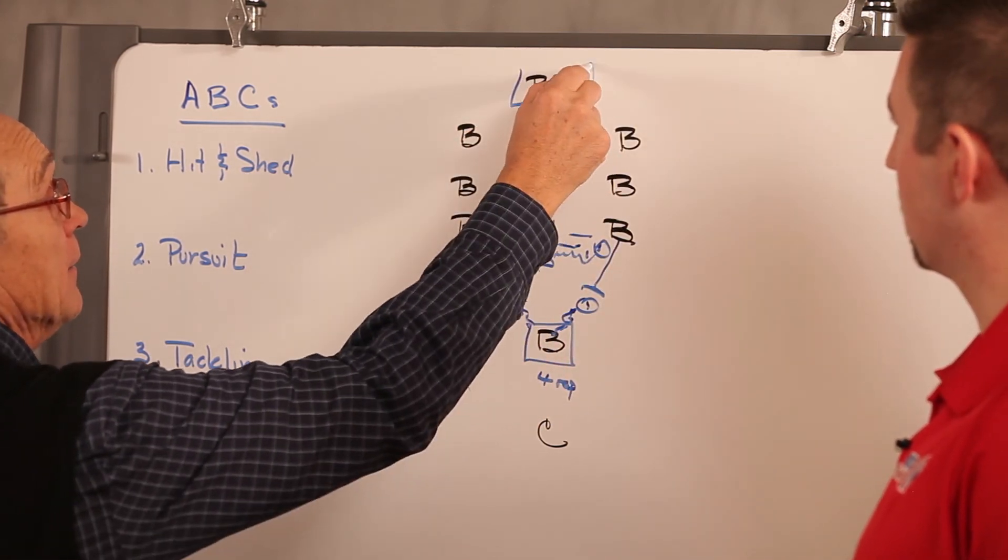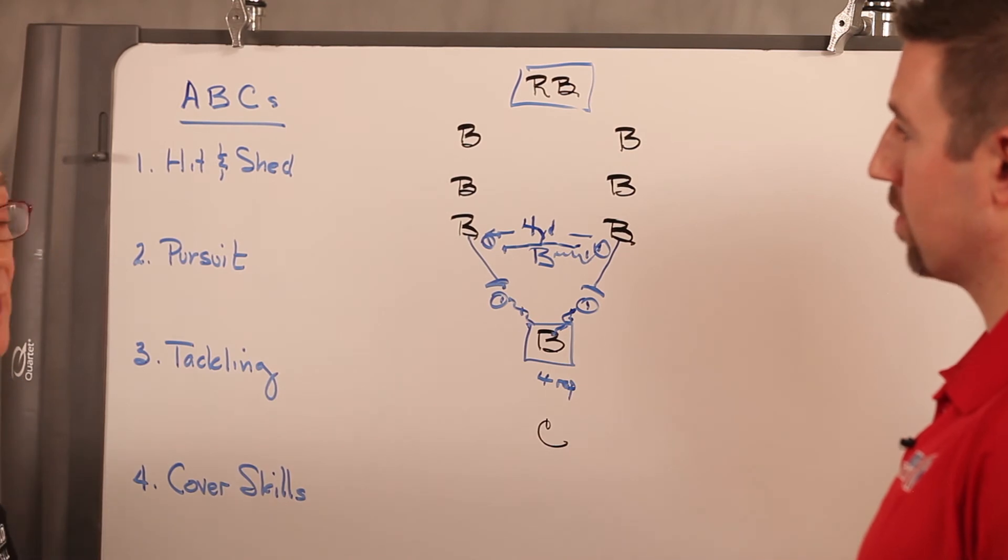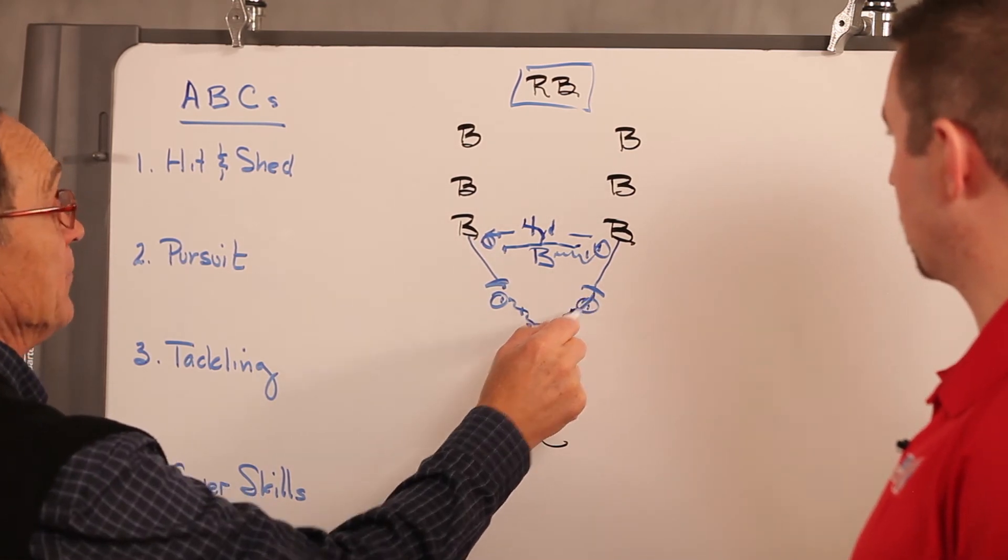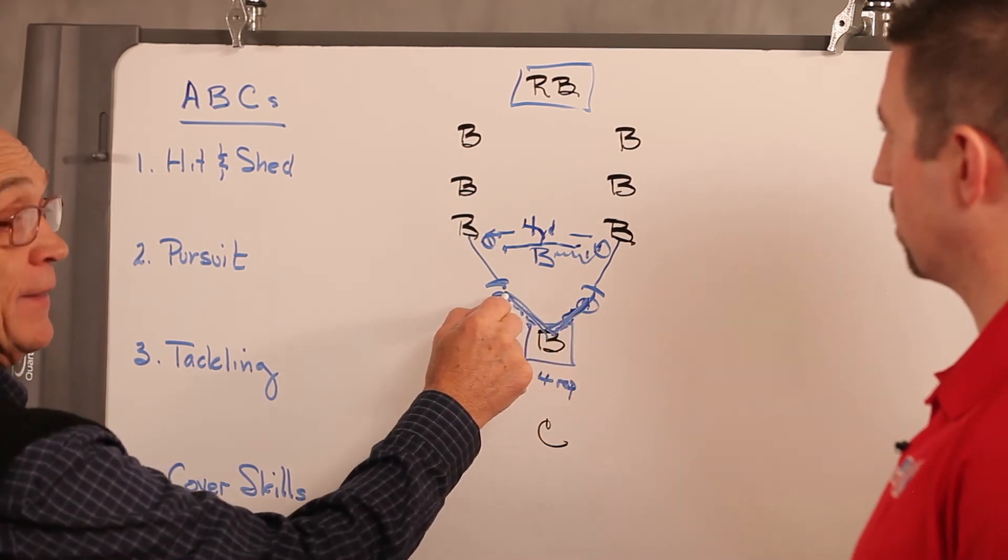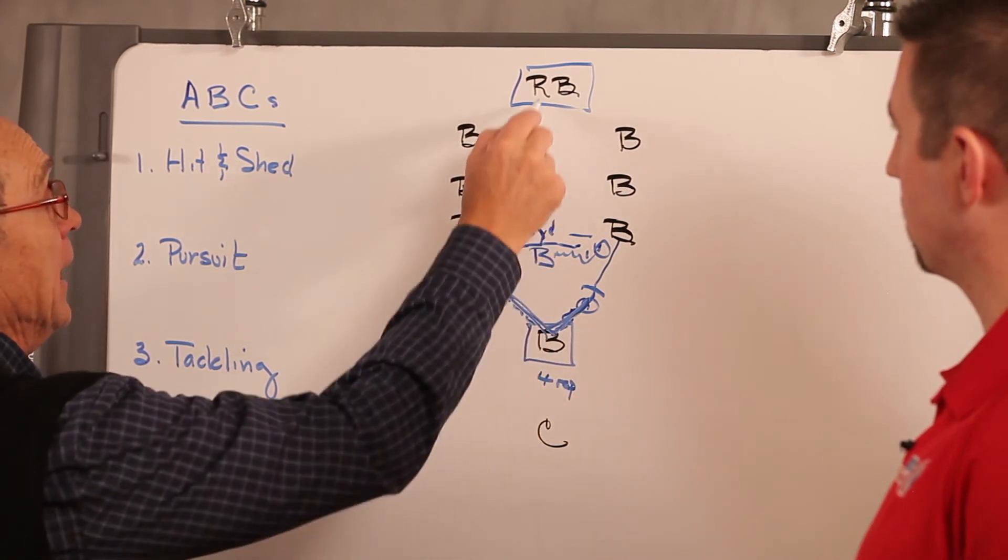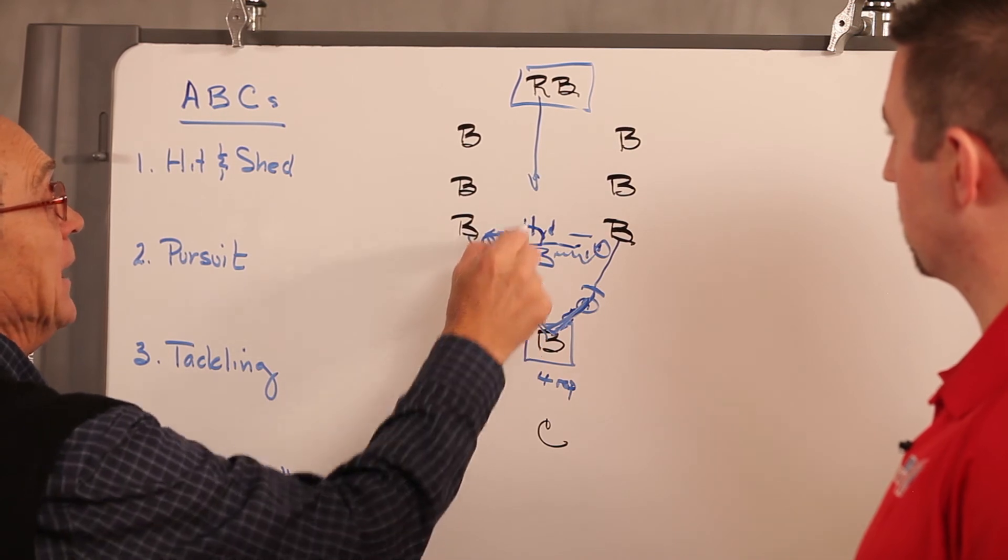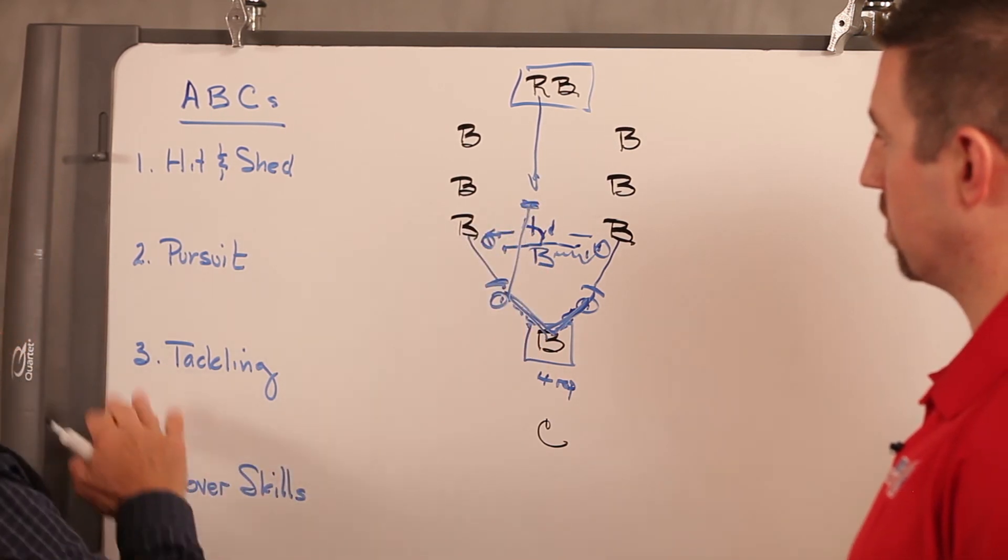We'll also as we get further along put a running back in and we'll hit with the right foot back, hit with the left foot back, hit with the right foot back, hit with the left foot and then we'll just say ball and the ball carrier will come forward